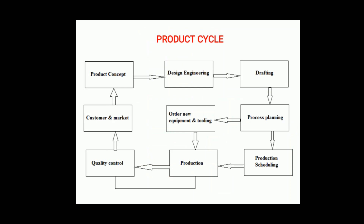The next part is the product cycle. There are different stages in the product cycle. First, a product concept — the rough idea — is converted into design engineering using CAD software for drafting. Then we process the plan for further manufacturing, order equipment and tooling, create a production schedule, proceed to actual manufacturing, then inspection and quality control, and finally launch the product into the market. This cycle continues and is called the product cycle.